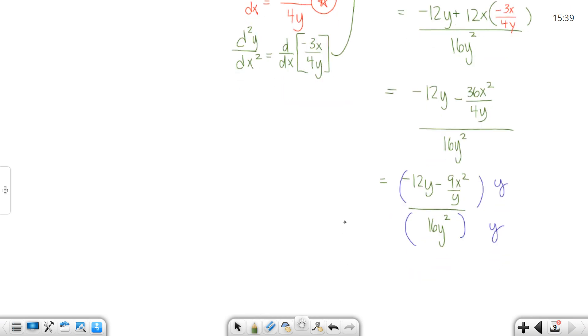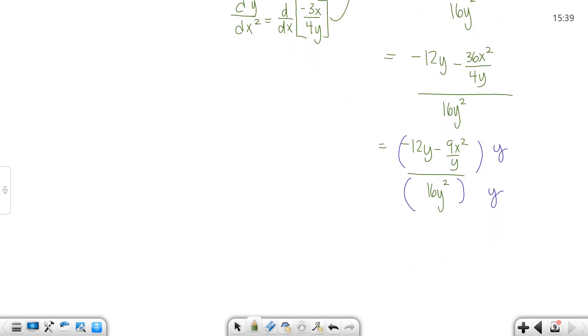And that gets rid of your complex fraction. So if you multiply y across the top you get negative 12y squared minus 9x squared over 16y cubed. Now I no longer have a complex fraction. When I multiplied it times this one, the y in the bottom and the blue y cancelled out leaving me with 9x squared.